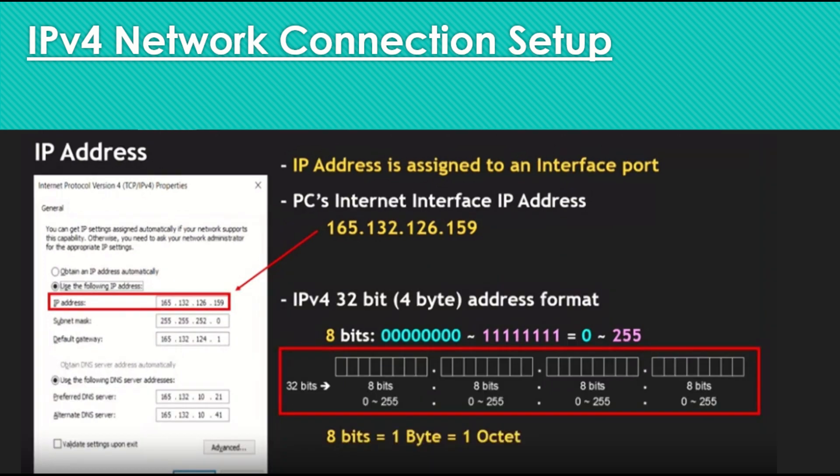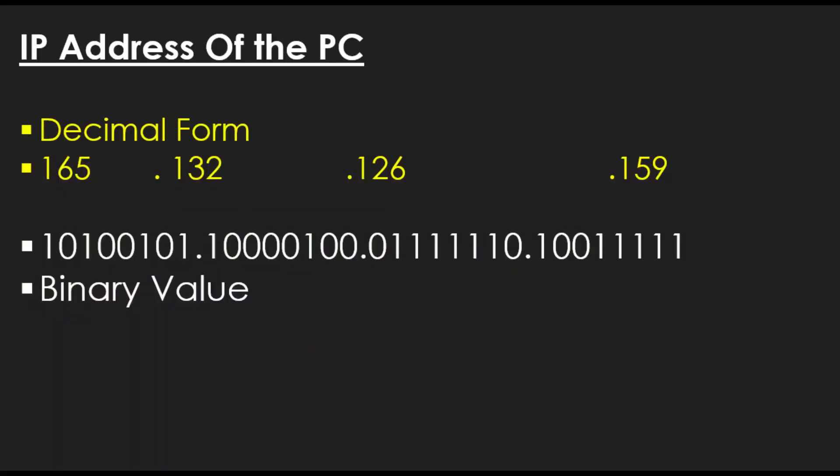What the address does is that it has 1 byte and then a period, 1 byte and then a period, another byte and then a period, and the last byte — so you have 4 bytes. 4 bytes equals 32 bits of the entire IPv4 address. So if you look at the IP address assignment here, 165.132.126.159 maps into the binary sequence that you see right here. This is the binary form of how we represent the IPv4 address.